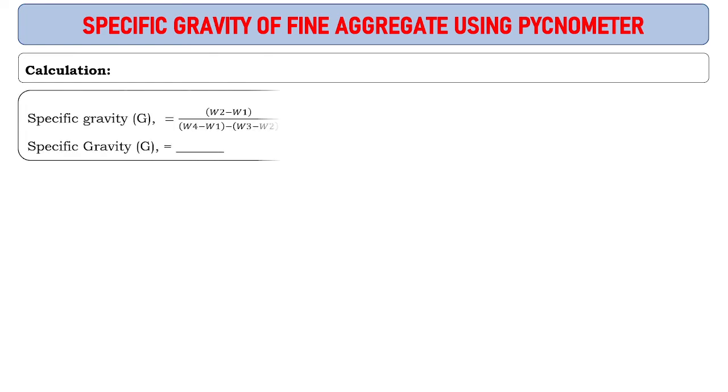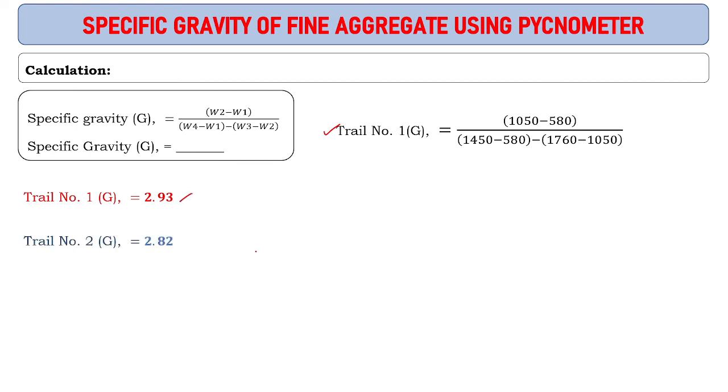The calculation we have done is shown here. For trial number one, the reading is 2.93. Trial number two reading is 2.82. Trial number three reading is 2.86.